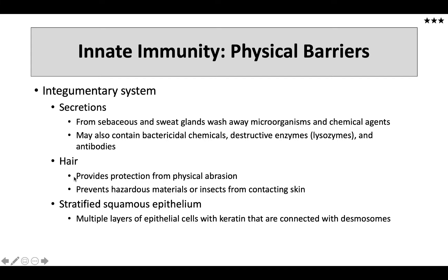Let's go through the innate immune system in more detail. We'll start with a look at the physical barriers that protect us against invading pathogens. These barriers include the stratified squamous epithelium which makes up our skin — our outer layers — consisting of multiple layers of epithelial cells and keratin connected with desmosomes.